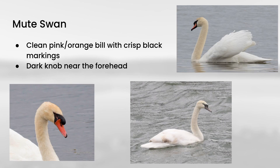Mute swan is a bit of an oddball in this topic because they can either be captive birds that are stuck at a single pond and have their wings clipped and can't go anywhere, or they can also be escapees or from a feral population that are basically wild and free-flying. And they've become pretty invasive in many parts of the country. The main thing you're looking for on these compared to the other swans is they have this orange, or sometimes more pinkish bill — the really young ones can be more of a gray tone — but they have crisp black markings at various points around the border, and they have a dark knob near the forehead.